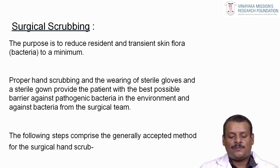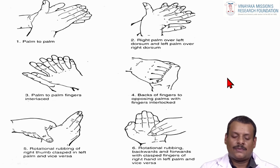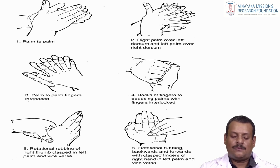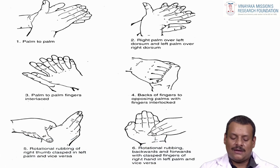The purpose of surgical scrubbing is to reduce resident and transient skin flora to a minimum. Proper hand scrubbing and wearing of sterile gloves and sterile gown provide the patient with the best possible barrier against pathogenic bacteria from the surgical team. The steps comprise: palm to palm, interlacing fingers; right palm over left dorsum and left palm over right dorsum; palm to palm fingers interlaced; backs of fingers to opposing palms with fingers interlocked; rotational rubbing of each thumb clasped in the opposite palm.